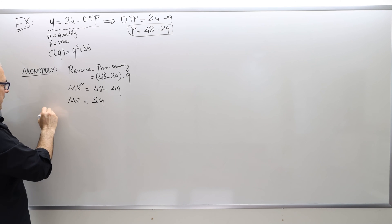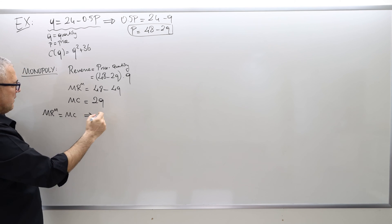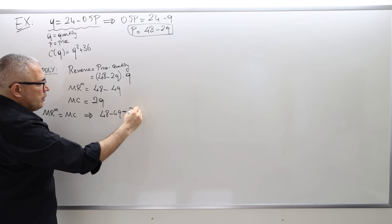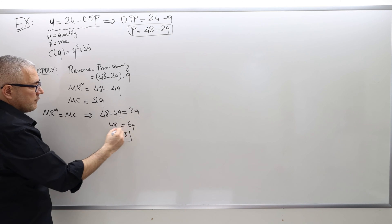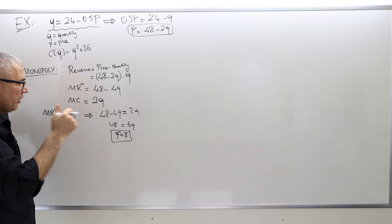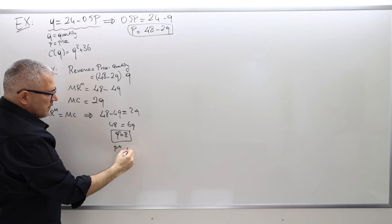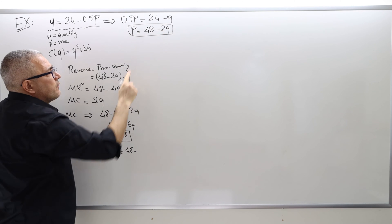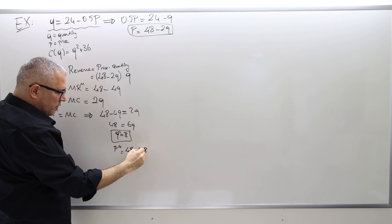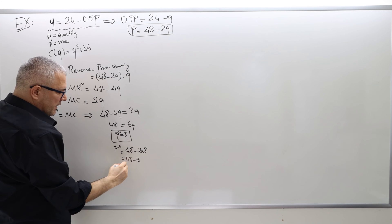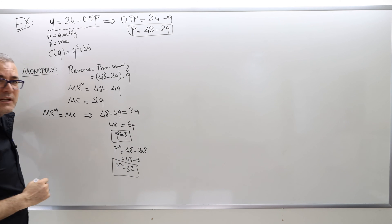To maximize profit, marginal revenue must equal marginal cost: 48 minus 4Q equals 2Q, so 6Q equals 48, giving Q equals 8. That's the monopoly output level. For the monopoly price, go back to the inverse demand curve: P equals 48 minus 2 times 8, which is 48 minus 16, equals 32. So the monopolist quantity is 8 and the monopolist price is 32.